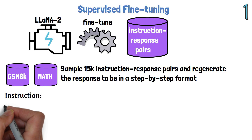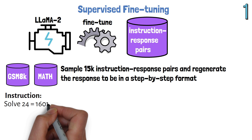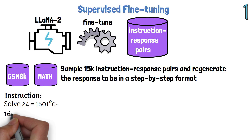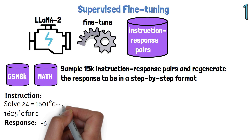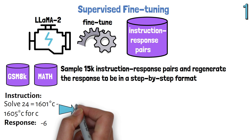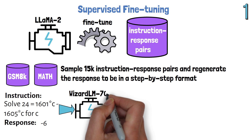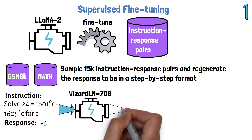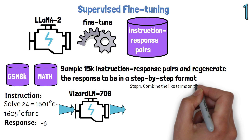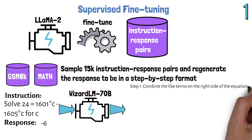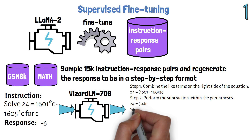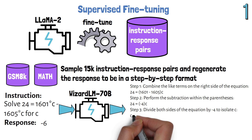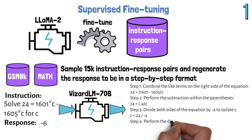For example, given a pair where the instruction is to get the value of C from a given equation and the response is minus 6, the pair is provided to WizardLM-7B to regenerate the answer in a step-by-step format. Here it would look something like this, where we can see the response in a step-by-step format. To create this example ChatGPT was used, but the point is the same.